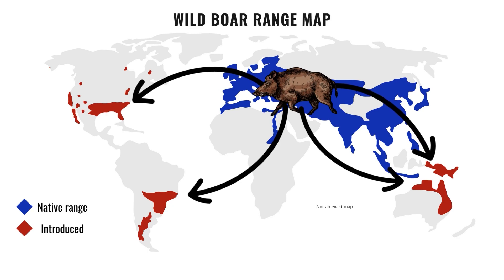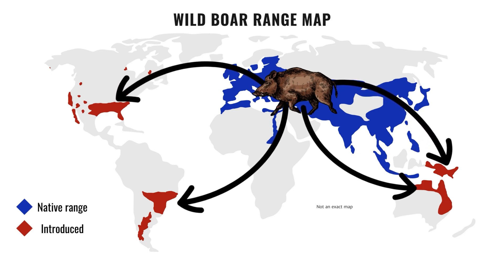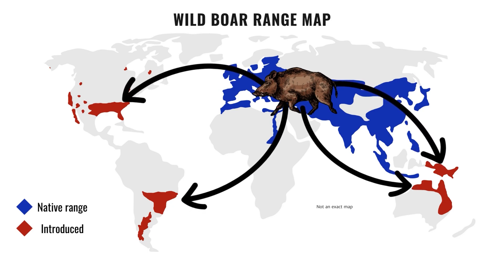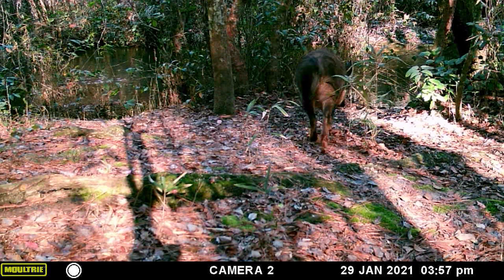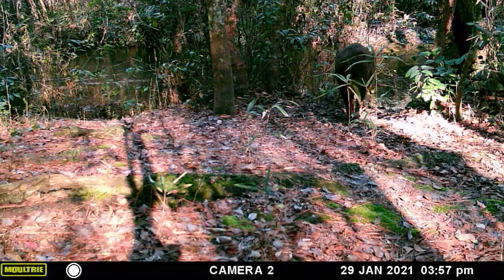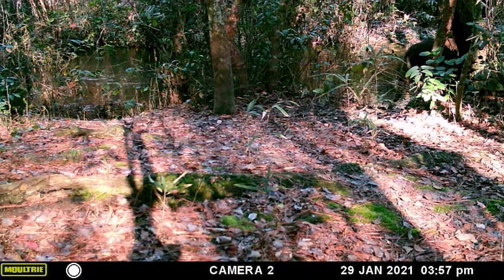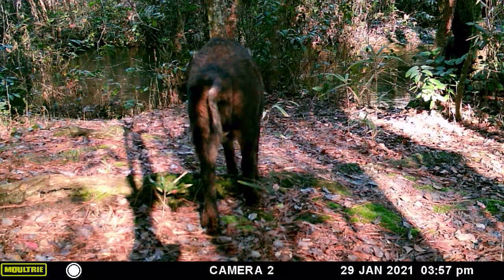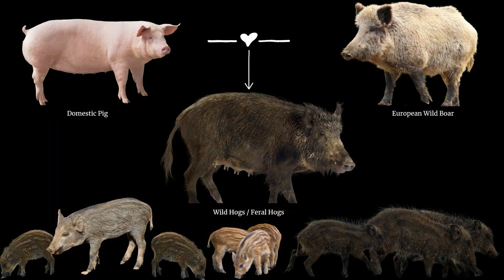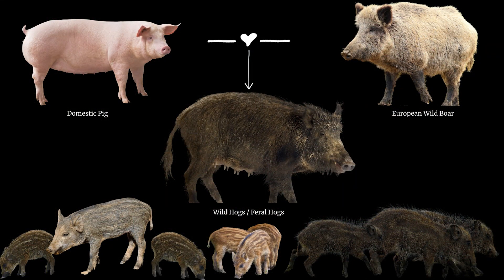The wild hog, also known as the wild boar, feral pig, or razorback, was first introduced to North America by the Spanish in the early 1500s as a food source. The swine quickly populated the forests, marshes, and fields. By the end of the 20th century, the Eurasian wild boar was released for hunting. These two swine populations, along with domesticated pigs which escaped from captivity, interbred and created the feral pig we have today.